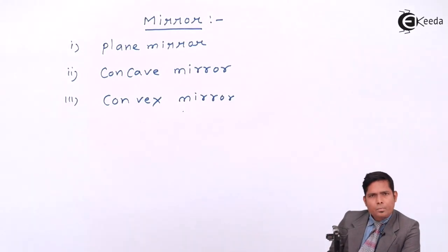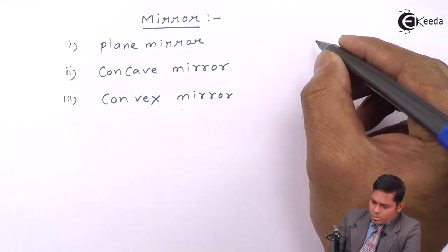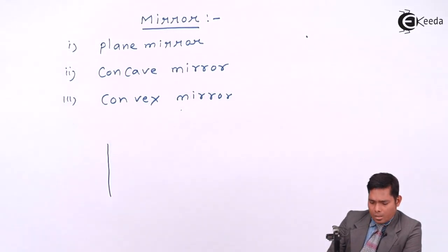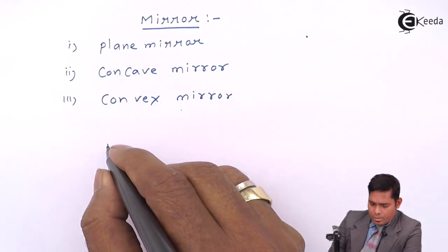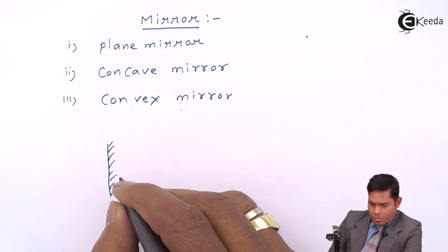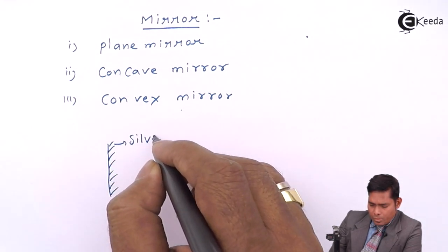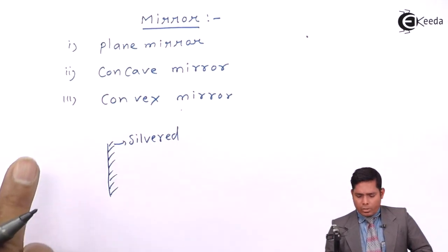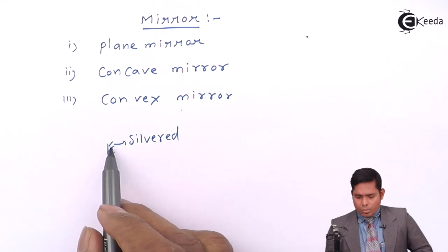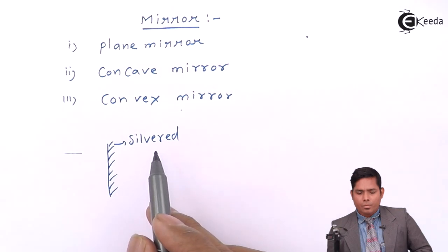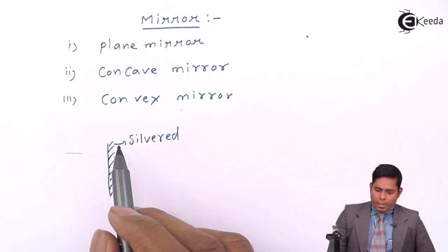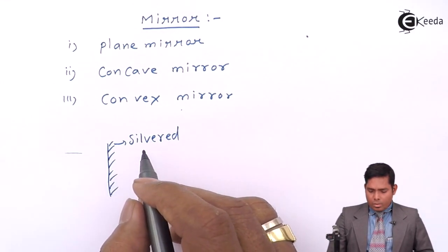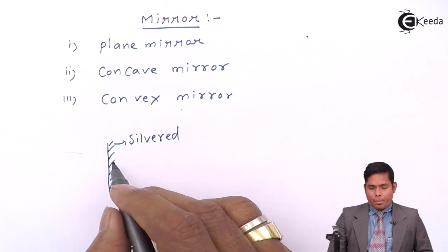In plane mirror, the surface is flat. One side is reflecting - this side is silvered. Some type of coating is there which prevents the light from entering because it is made of glass. Without silvering, the light will enter and pass through.